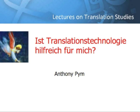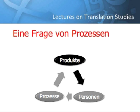This question concerns in principle just the process part of my model of translation studies, because translation technologies concern how you produce a translation. But I would argue that the technologies themselves are more powerful as drivers of communication history, and that they affect also the nature of the products — the texts we produce and the texts we work from — and very much the kind of people we are, the skill sets we need, and the range of professions available to us. So I'll be addressing all three parts of translation studies.